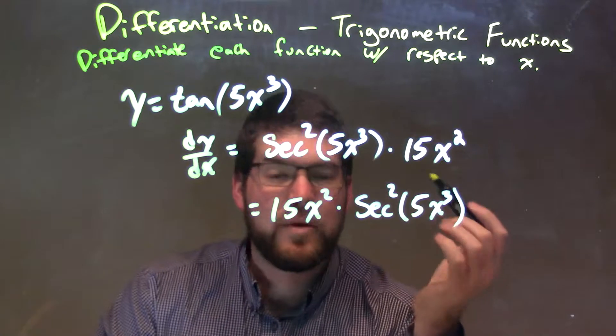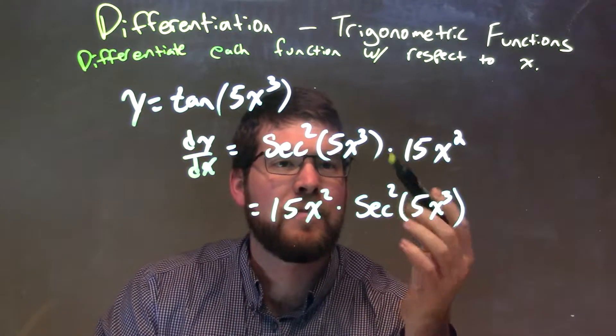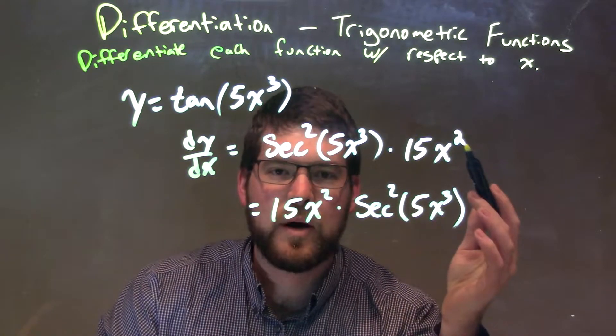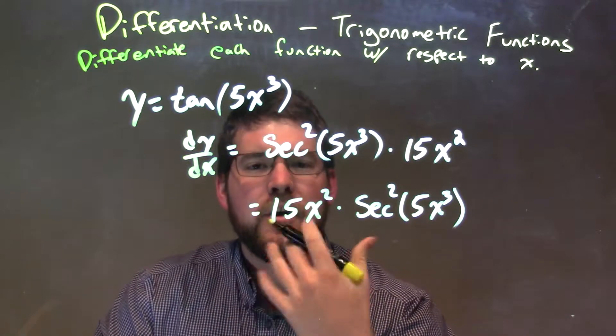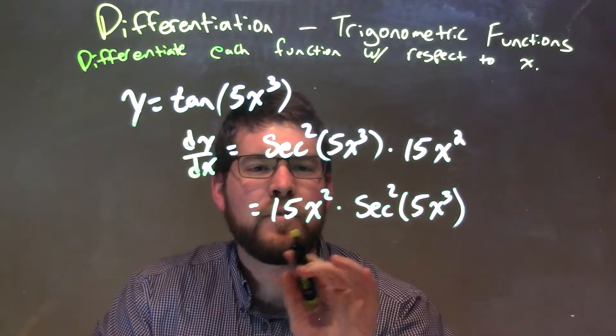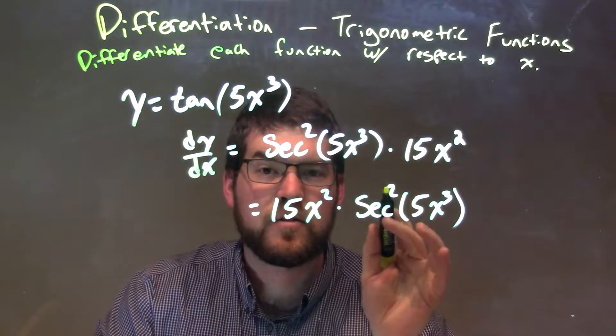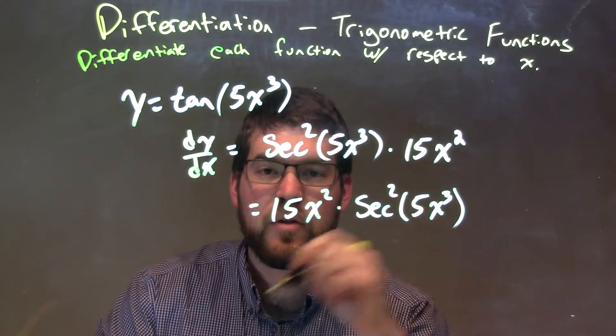Then we multiply that by the derivative of the inside. Derivative of 5x to the third is 15x squared. We rearrange that first. So our final answer again is 15x squared times secant squared of 5x to the third power.